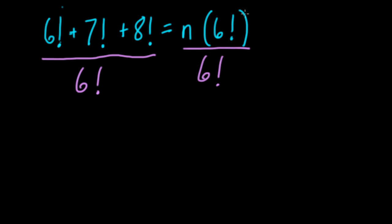So here 6 factorial divided by itself is just 1. Anything divided by itself is 1. And on the left-hand side of the equation, we have three terms, and we're dividing each of them by 6 factorial.